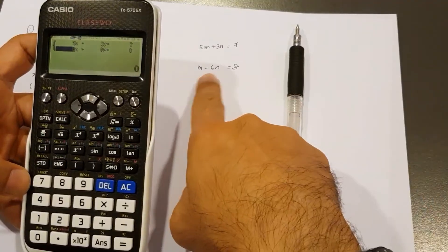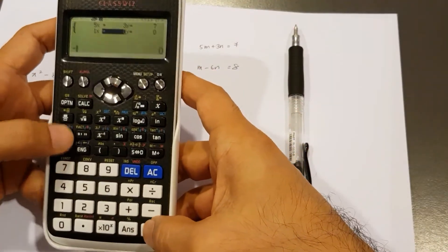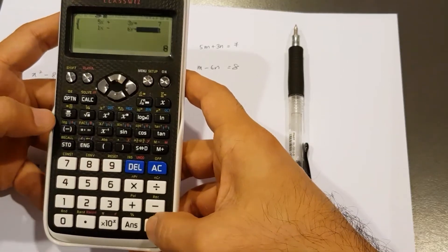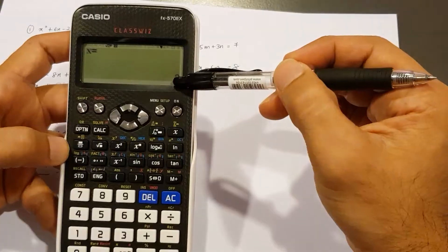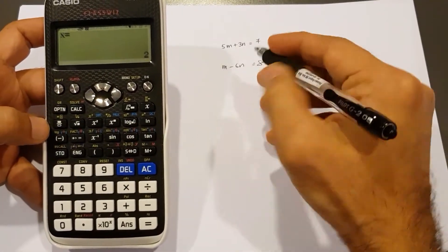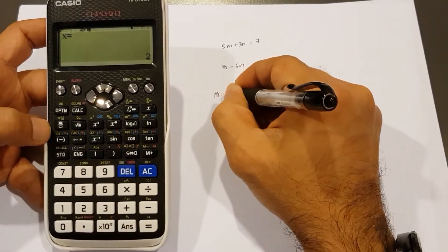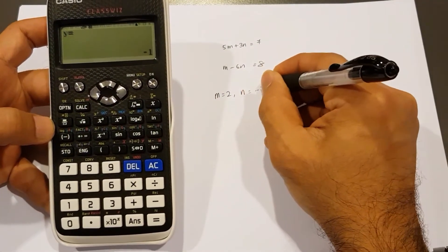So one equal negative six equal eight equal. All right. Now I press equal again. I've got X equal to, of course it will give us X, but our question is M. So M equals two. Again, one more time. And N is equal to negative one.